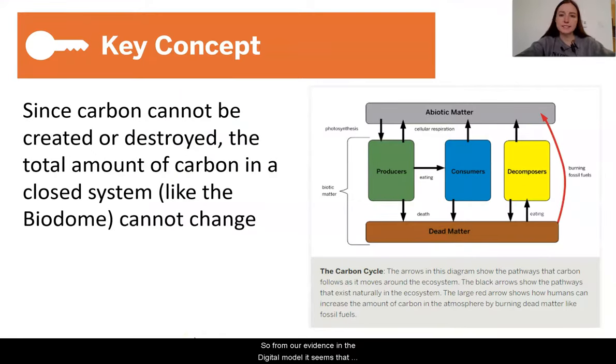So, from our evidence in the digital model, it seems that the carbon that is missing in our ecosystem is actually getting trapped in energy storage molecules in the dead matter. When the decomposers were decreasing, there wasn't really anything to take the dead matter and take that energy storage molecule and break it down to release it to carbon dioxide. So, the energy storage molecules that contain that carbon are kind of getting stuck in this dead matter here.